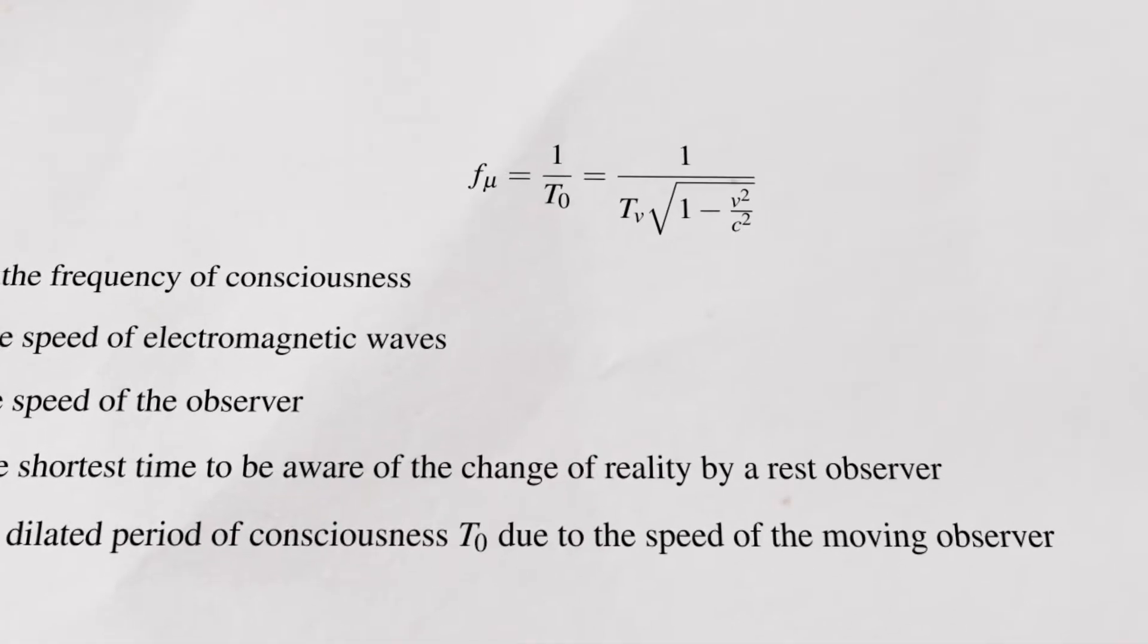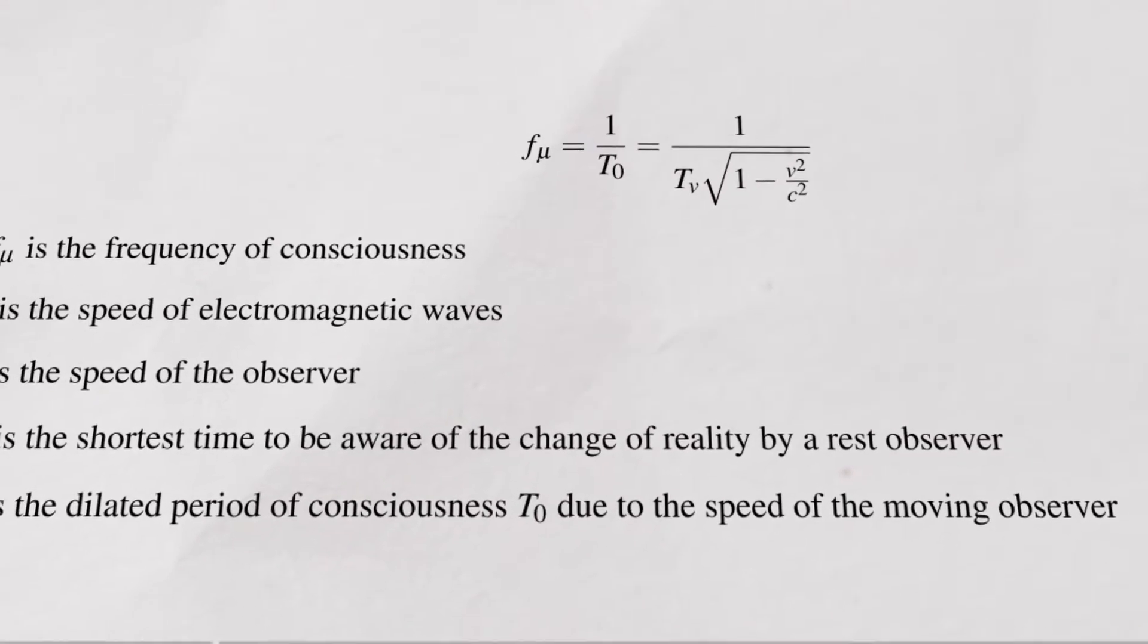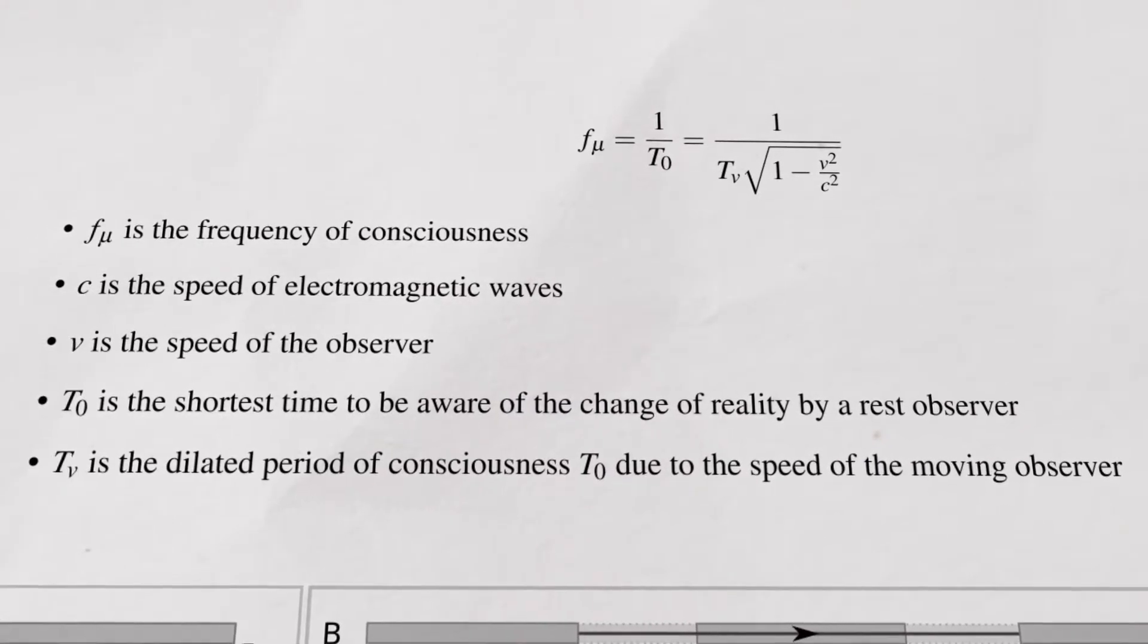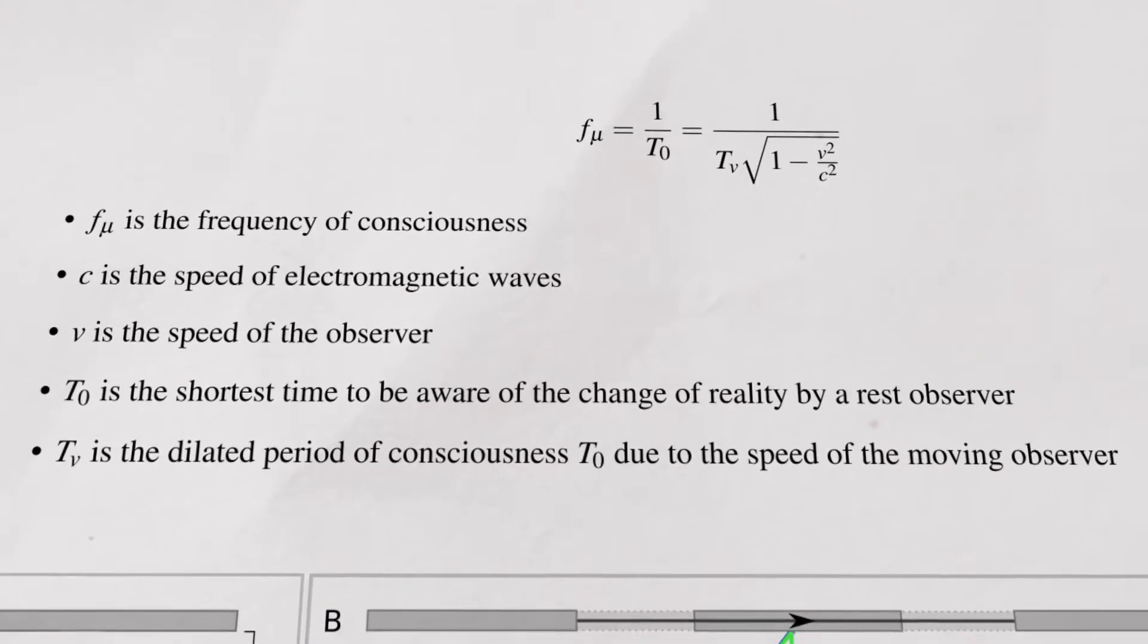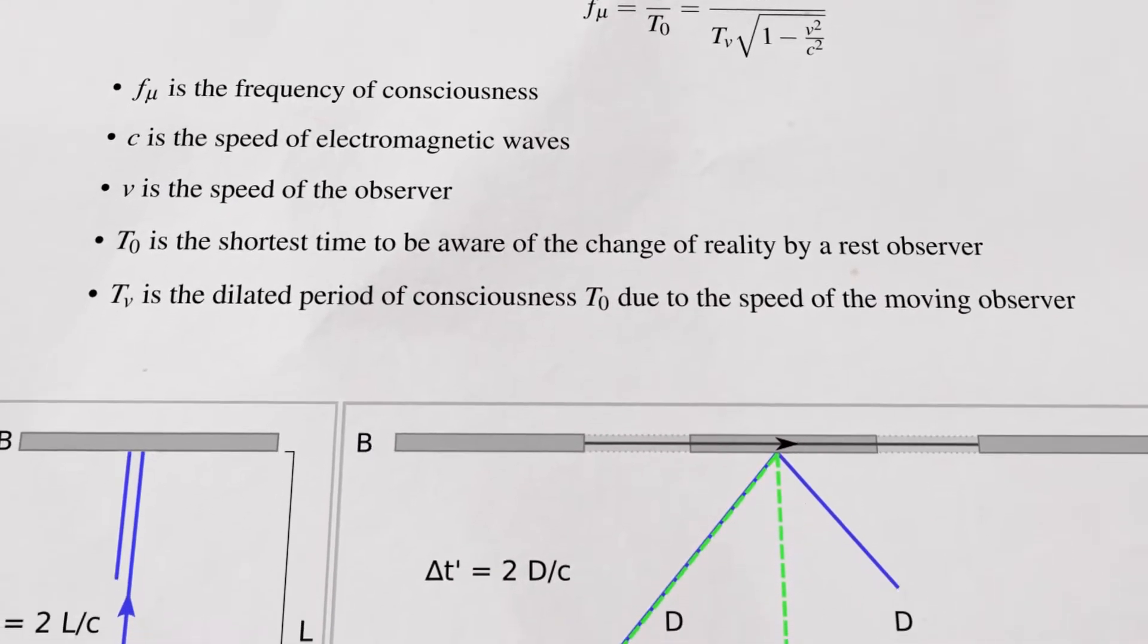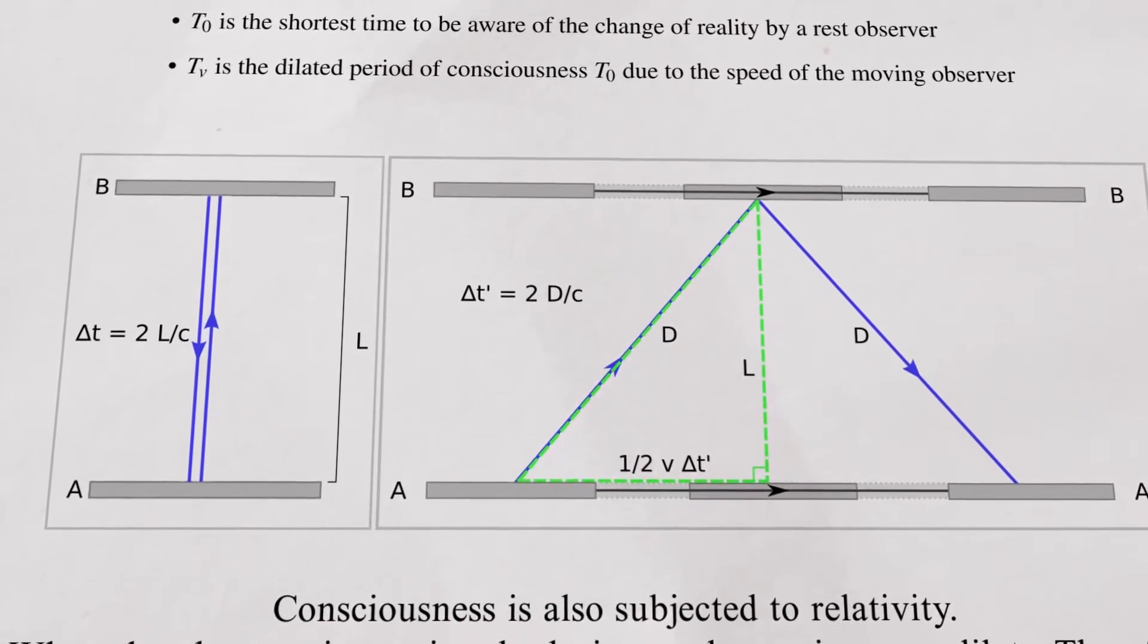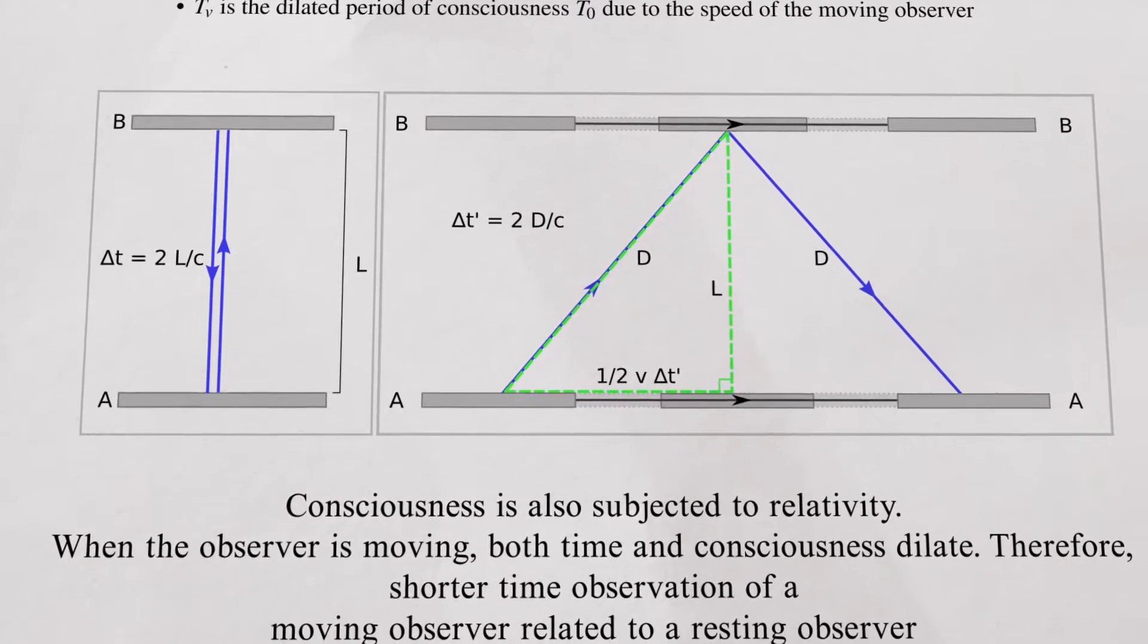Now, let's understand consciousness from our model. From the theory of relativity, we know time dilates, which means consciousness is also subjected to relativity and dilates. Therefore, shorter time observation by a moving observer relative to a resting observer doesn't mean an advantage in information processing or awareness since consciousness is also slowed down.